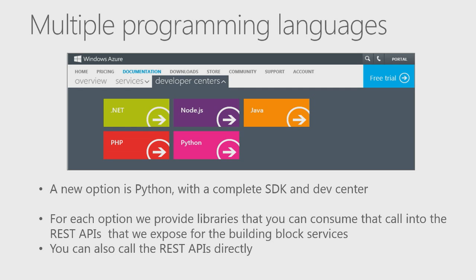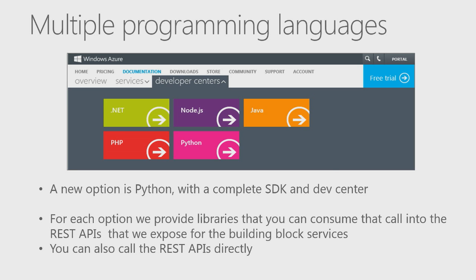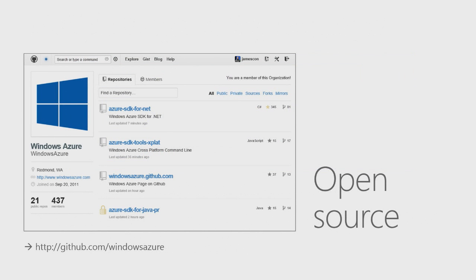We now have, as part of our Developer Center on WindowsAzure.com, support for multiple programming languages including .NET, Node, Java, and PHP. One of the new languages we're now enabling is Python, with a complete SDK and its own Dev Center. For each of these, we provide libraries that call into the REST APIs we expose for the building block services. You can always call the REST APIs yourself directly. All of the libraries are hosted on GitHub under an Apache 2 license, so you can both see the source and contribute back to the source.